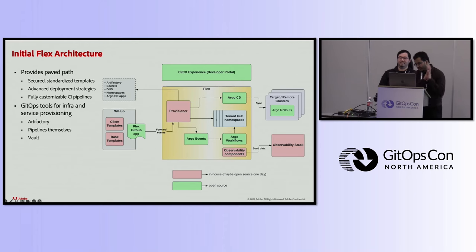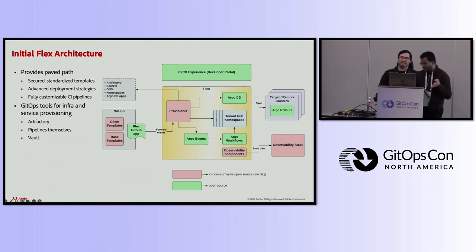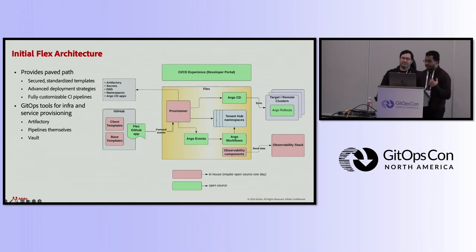Flex provides a paved path to help users get from an empty GitHub repo to a solution running in production. By paved path, I mean we provide developers with shared, standardized, secured templates. These templates include advanced deployment strategies like Canary and Blue Green, as well as a standardized set of build and deploy pipelines. We try to keep them open to customization and extension. We also provide GitOps-based tooling to help users provision infrastructure across various Adobe services — for example, Artifactory repos for Helm and Docker, the build and deploy infrastructure itself, vault policies, and so on.